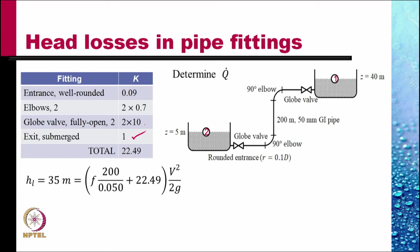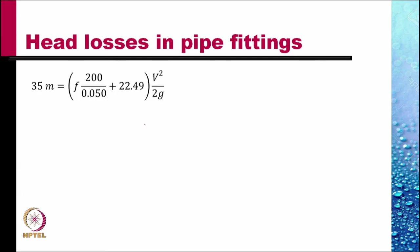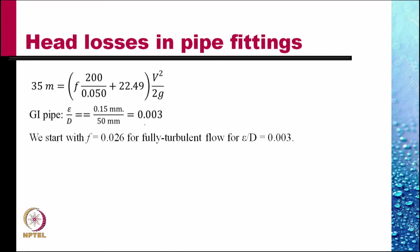And from the head loss equation we get this. We need the value of f to determine V squared by 2g. We can follow the same process that we followed earlier and by iteration we can determine the values.